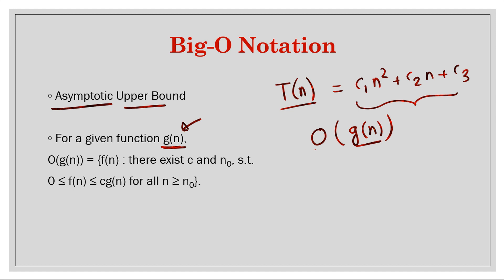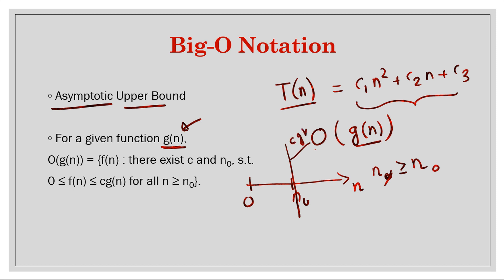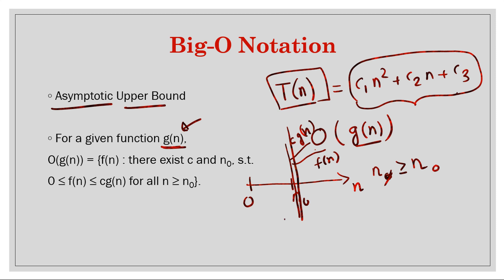g(n) is such that for some value of n greater than or equal to n0 — where n0 is the minimum starting input size, since input size cannot be negative — beyond n0, some constant multiple c times g(n) is always more than the original function f(n). If f(n) is always below c·g(n) beyond a certain n0 for some constant c, then g(n) is the Big O of that function.